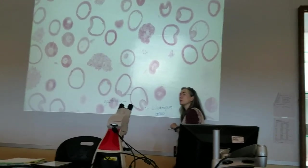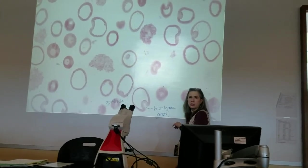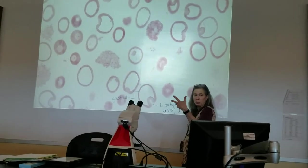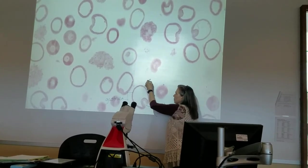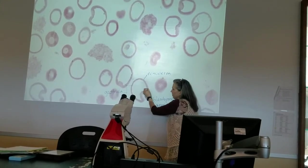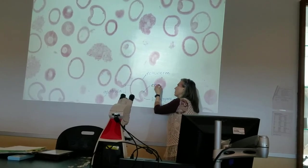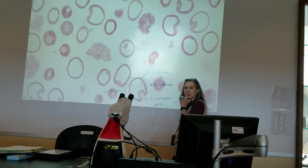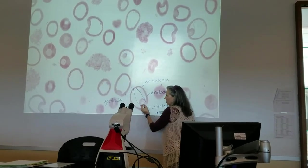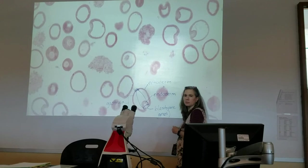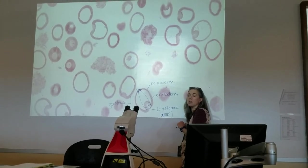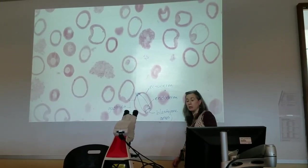This is also where we start to develop things called germ layers: ectoderm, mesoderm, and endoderm. The ectoderm is actually going to become the nervous system and the skin. This lining of the tissue that pokes in is the endoderm. If you're the endoderm, you're going to become the lining of the GI tract - it lines the gut. This tissue will become the lining of your intestine, your mouth, your esophagus, your stomach - the entire digestive tract.